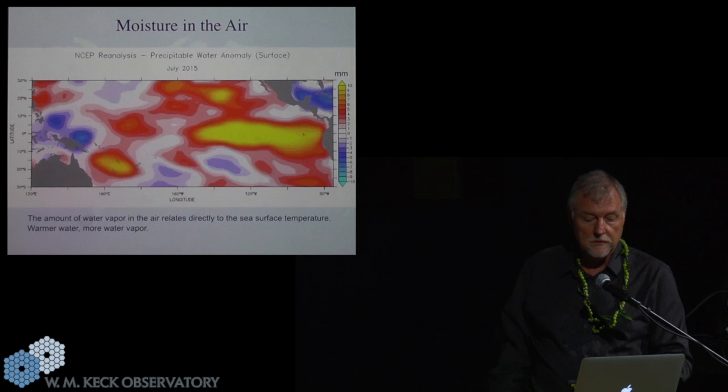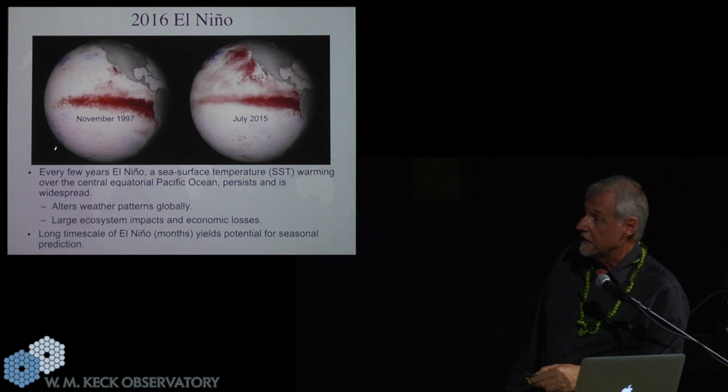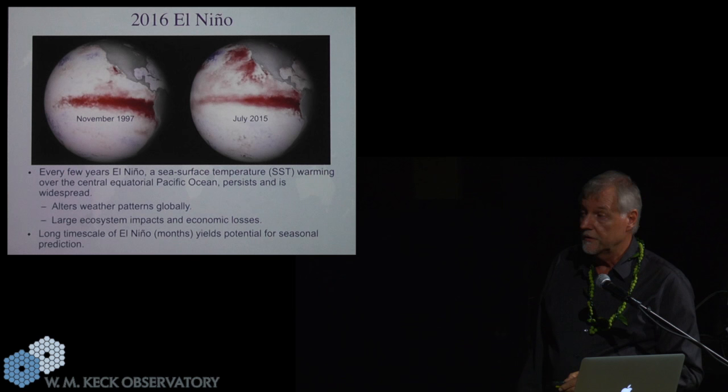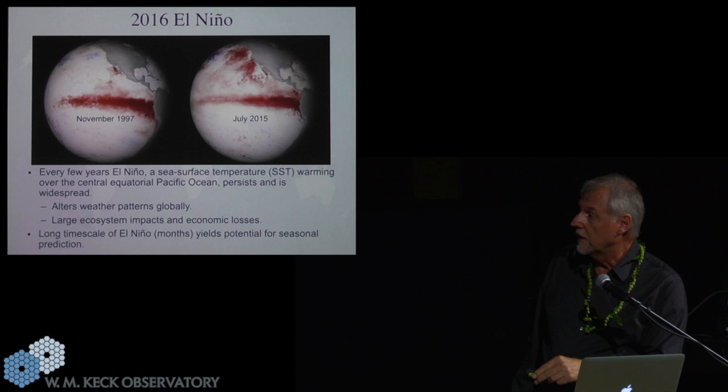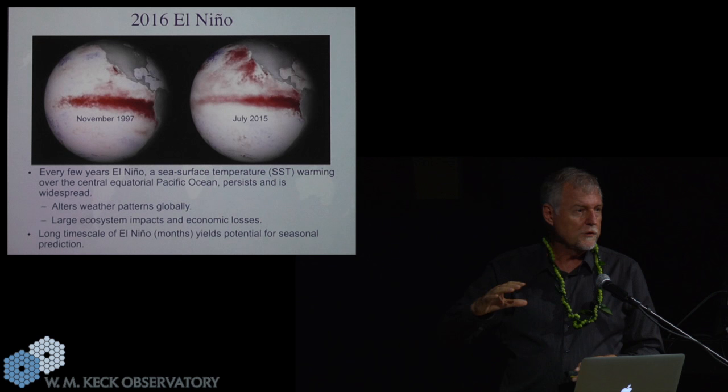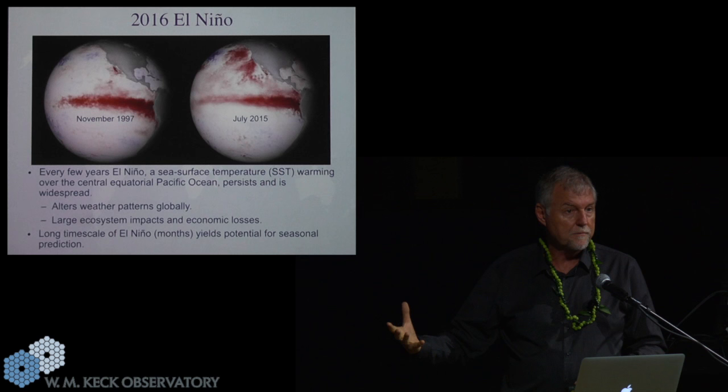To answer the question, why do we care about El Nino? Every few years, we get this anomaly, and it alters the weather patterns globally. Large ecosystem impacts result, and they have economic losses tied to them. There's a relatively long time scale for El Nino. It lasts for months. You can kind of see it developing, and it has a characteristic signature. Because of that, you can start doing seasonal prediction. And that has real important economic implications, too.